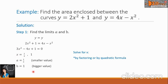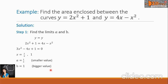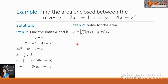So we can write a to be one-third, the smaller value, and b is 1, the bigger value. Let us do step 2, and that is solving for the area.